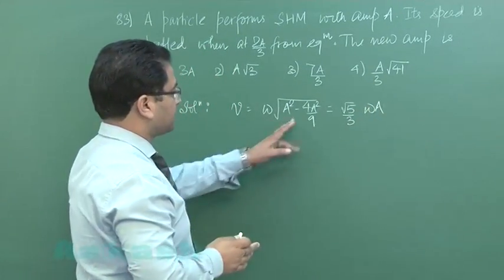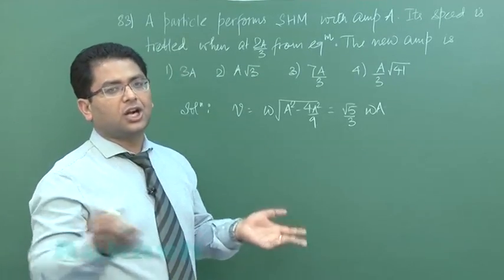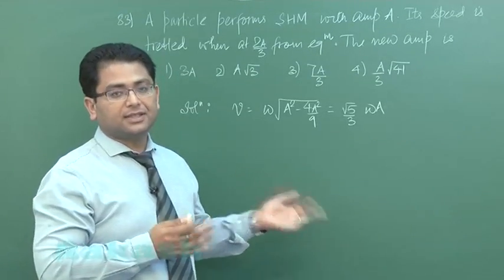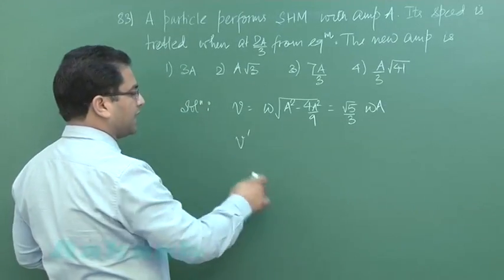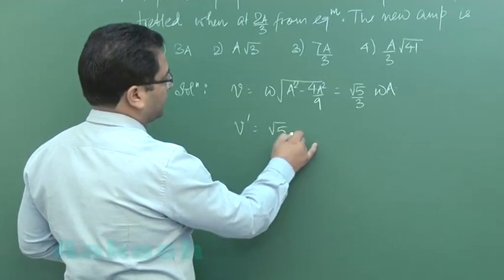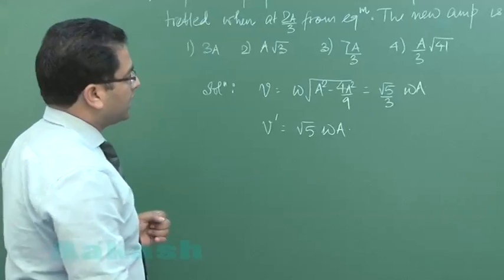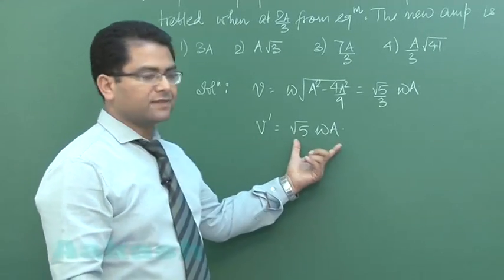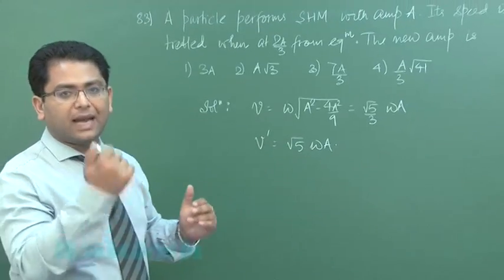This is the speed at this particular distance but suddenly maybe by any cause a sharp impulse might have been given and the speed becomes trebled. So now the new speed at the same position is root 5 times omega A. This is the new value of speed but the position is same and we need to calculate the new amplitude.